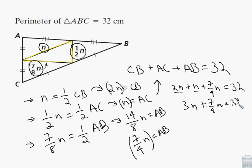Now, we can't add a fraction. Let's figure out how many-fourths 3 is. So if we just multiply by 4 over 4, 4 times 3 is 12. So we get 12-fourths n plus 7-fourths n equals 32. So 7 plus 12 is 19. So we get 19-fourths n equals 32.